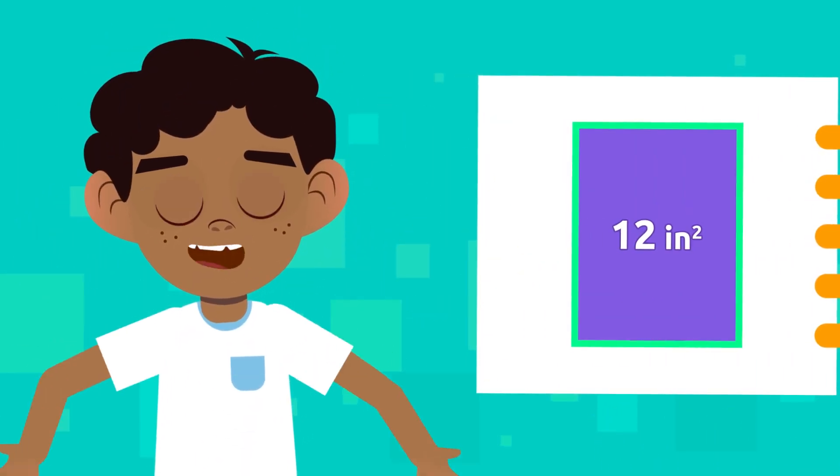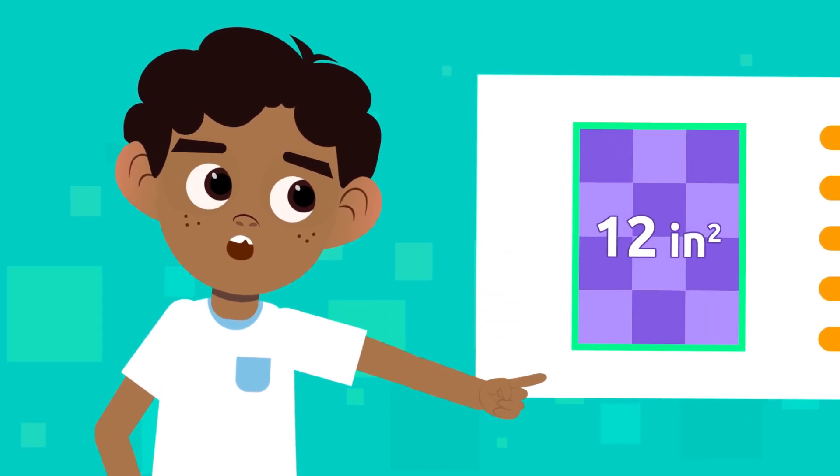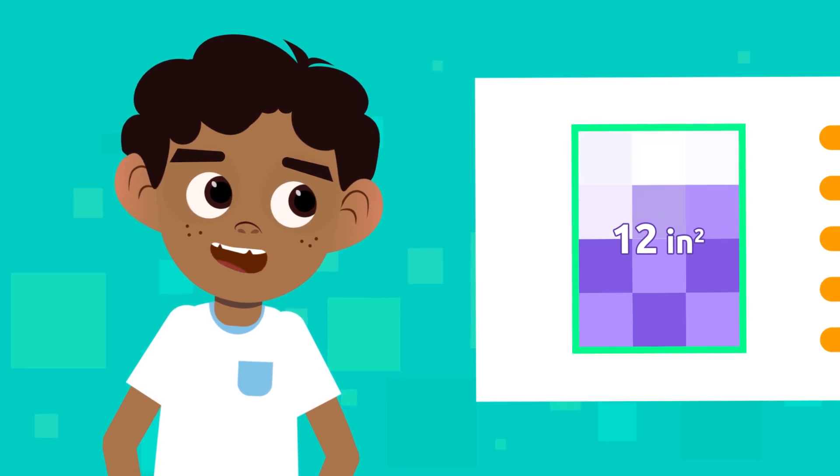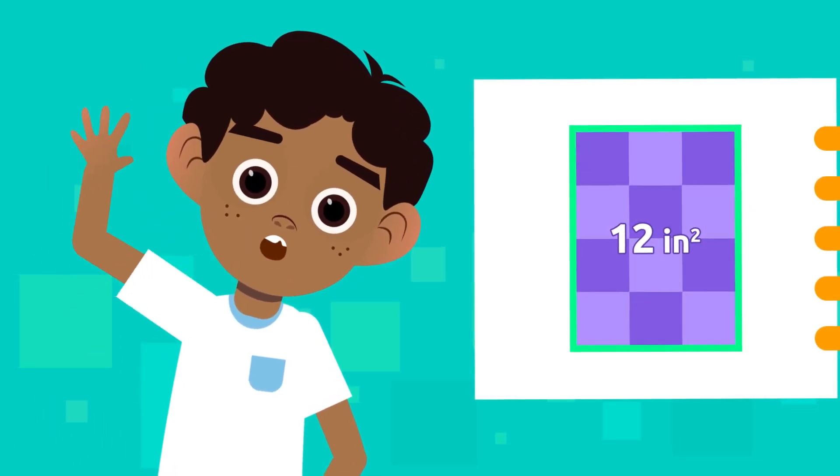Great! The area of this rectangle is equal to 12 square inches. That means 12 one-square-inch squares fit in this rectangle. Easy, isn't it?